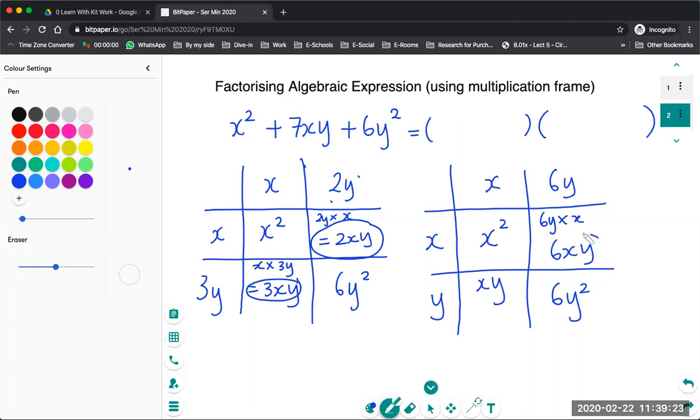And given that plus 6xy plus xy, yep, I think I've got it. So this would give me 6xy plus xy is going to give me 7xy. Check. Right. So this is the combination that I'm getting.